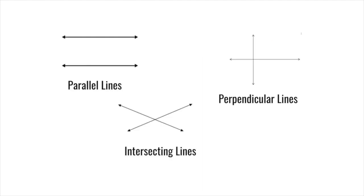Now we will talk about different types of lines. The first one we will talk about are parallel lines. Parallel lines run the same direction and go on and on and will never touch no matter how long they are extended.